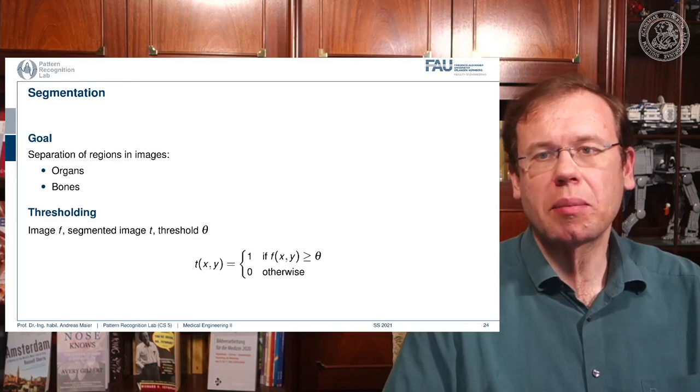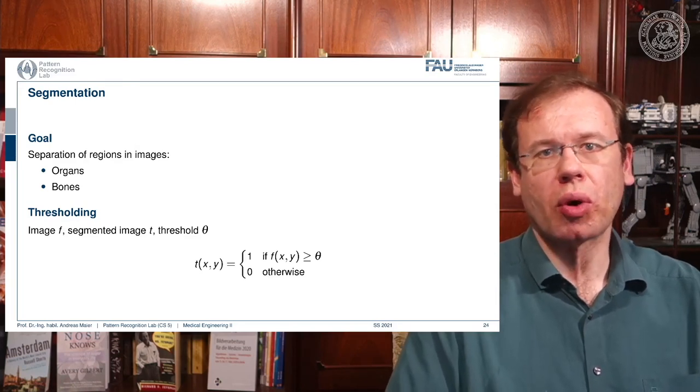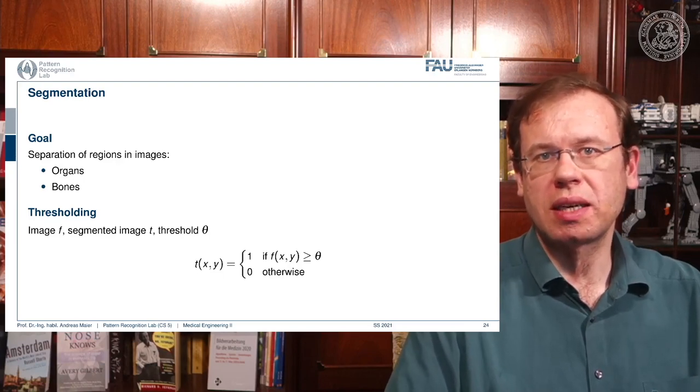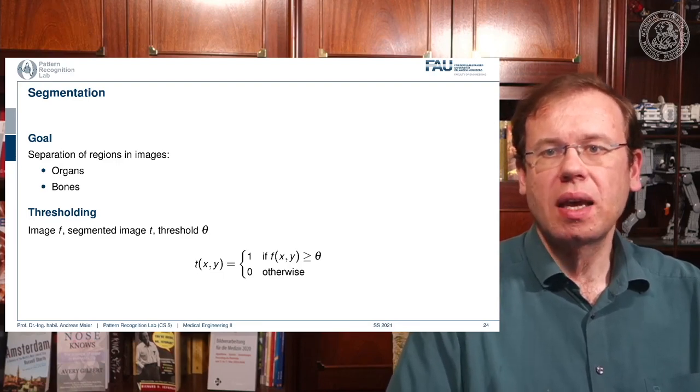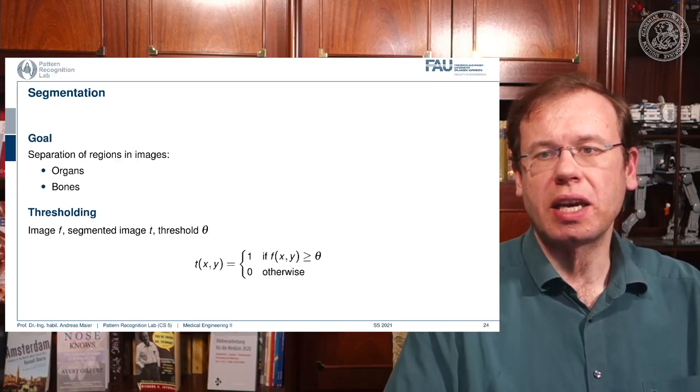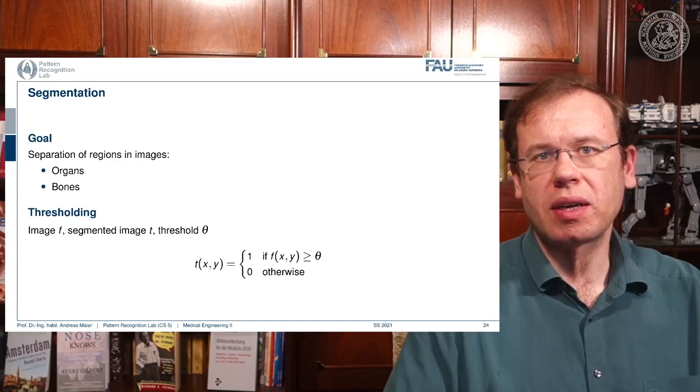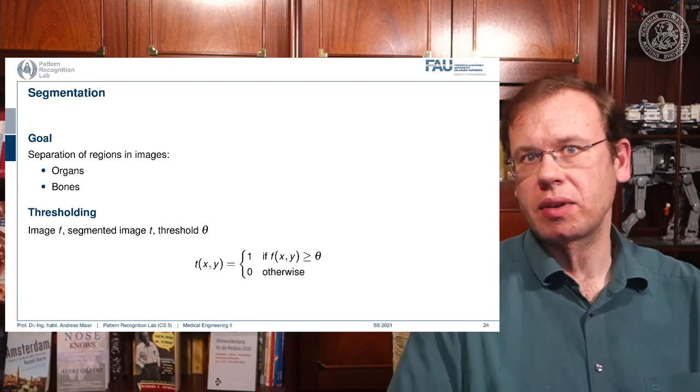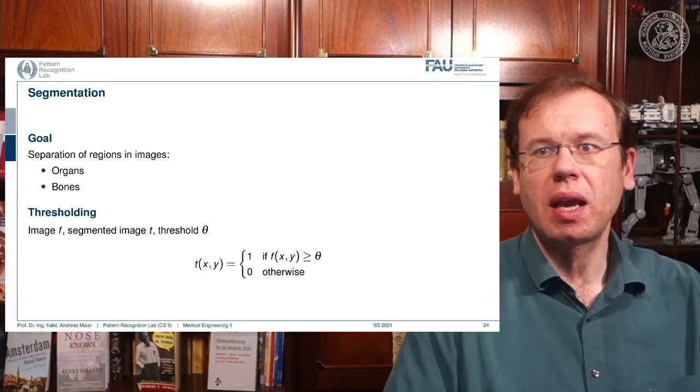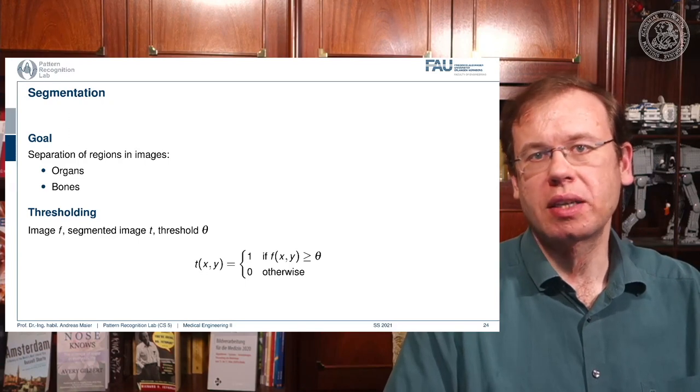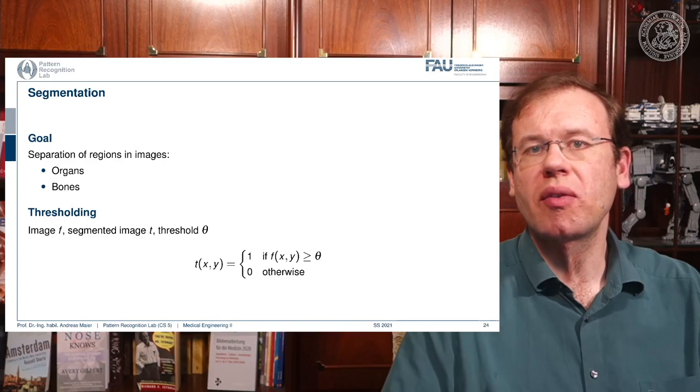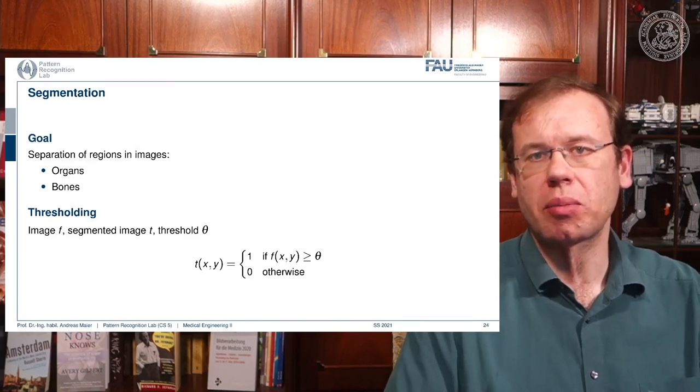So for example we could do that for organs that can be differentiated by contrast, or to figure out where the bone in the image is. The idea is then that we define a function that takes the image f, checks whether the position f of x, y exceeds the threshold, then we assign value one, and we assign value zero otherwise, so we binarize the image. There's only two values in the image after we are finished with the processing.